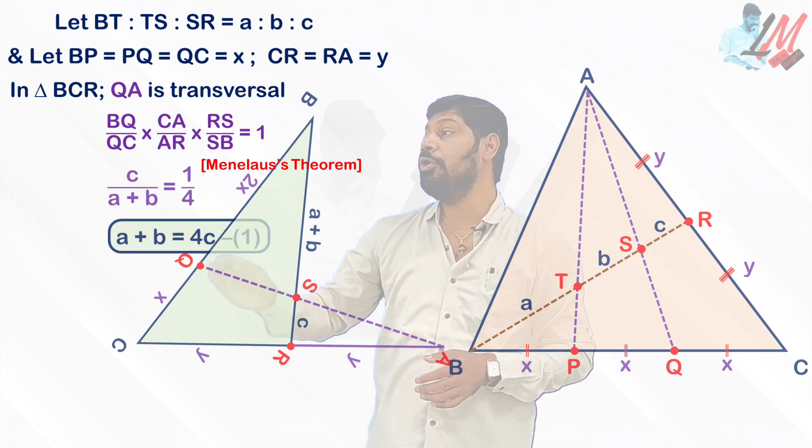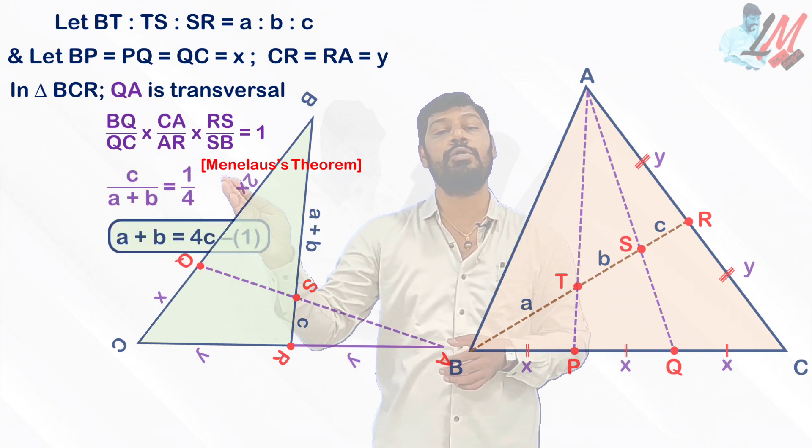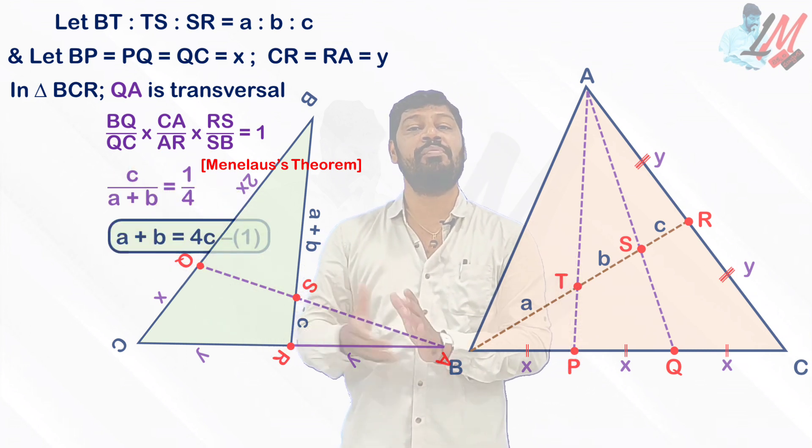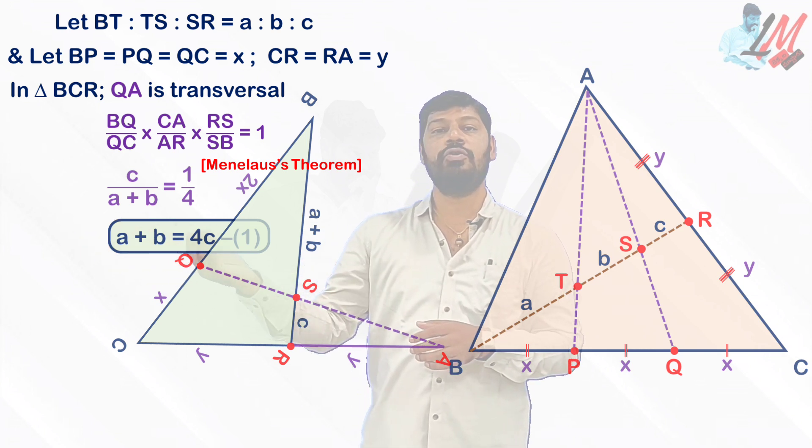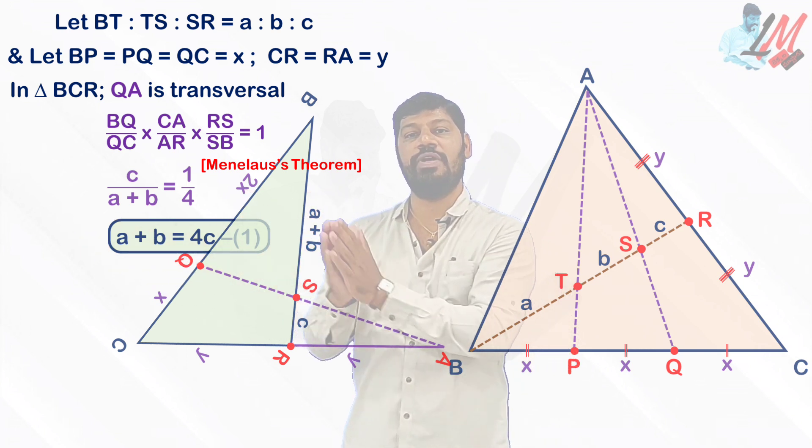On simplification what you are going to get: C by A plus B equal to 1 by 4. If you do cross multiplication, you are going to get A plus B equal to 4C. Let me make it as equation 1.